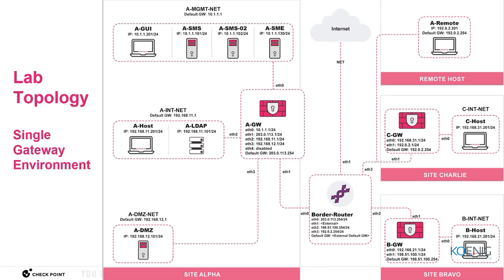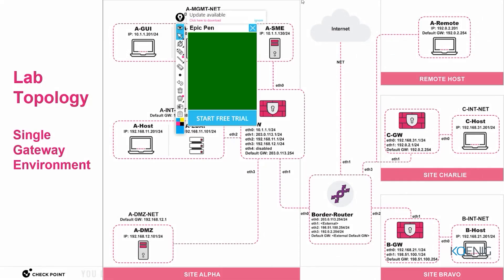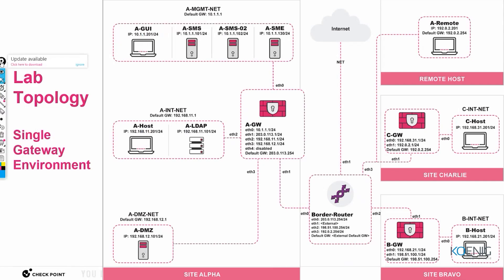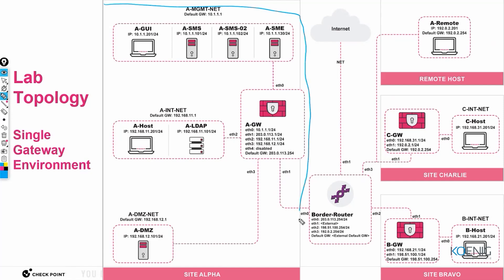This is the topology. In this topology, as you can see, we have three major sites. We have one head office — this is the head office, and it has the name Alpha site.